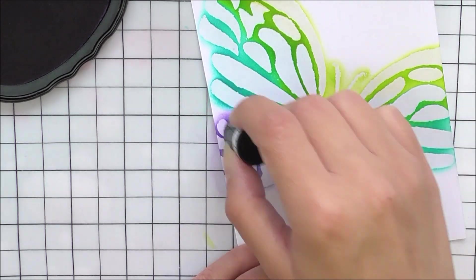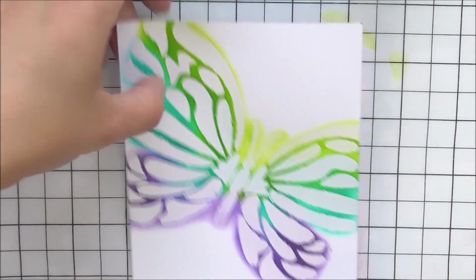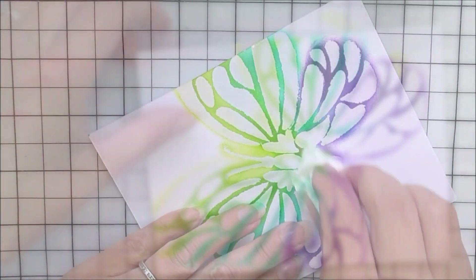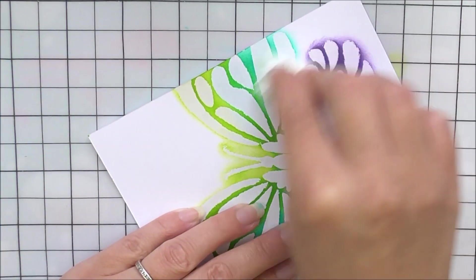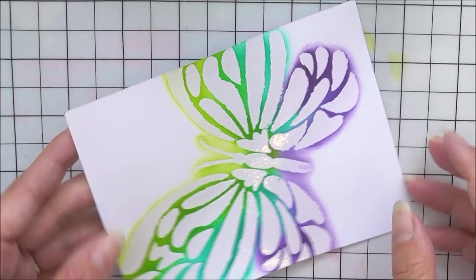And there is my colored butterfly complete. It does look very, very pretty. Before I move this over to the side, I do take a clean dry tissue just to wipe away any excess ink so I don't put my finger in it and do any smudging.